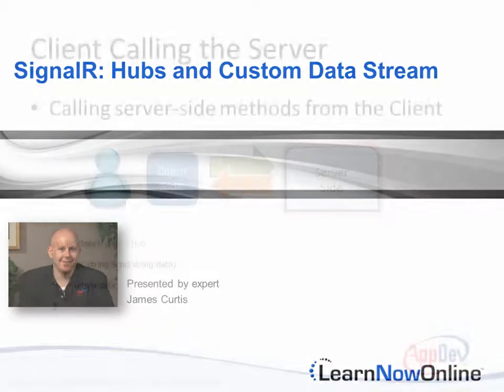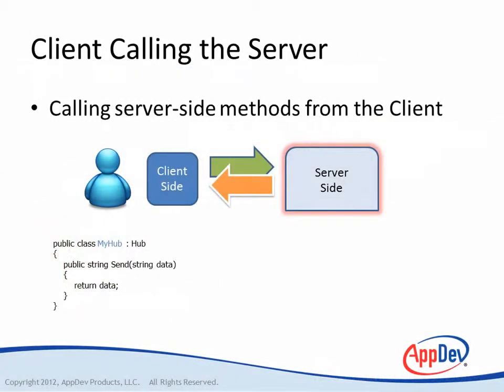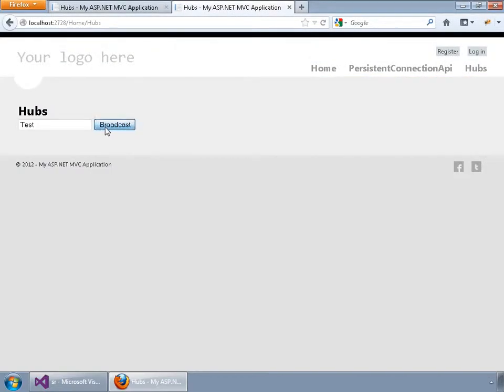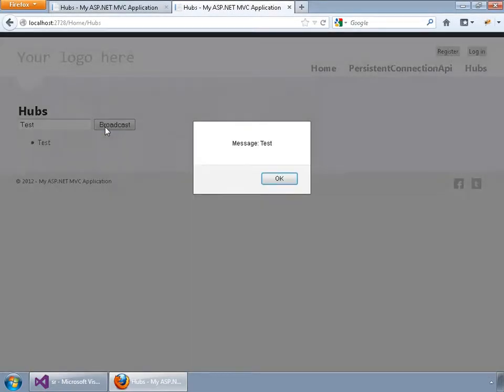SignalR is a complete client-side and server-side solution with JavaScript on the client and ASP.NET on the backend. This allows native linking from the client-side to the server-side and back again.